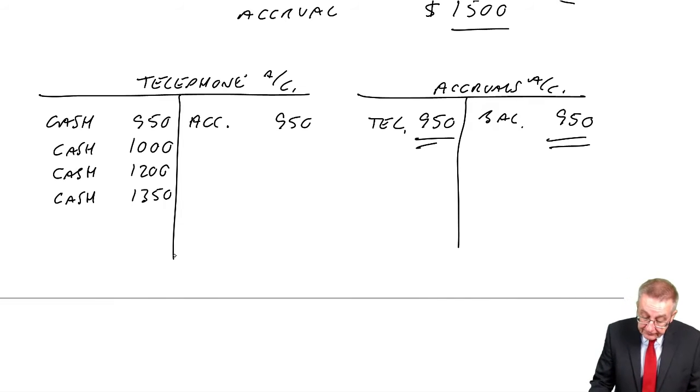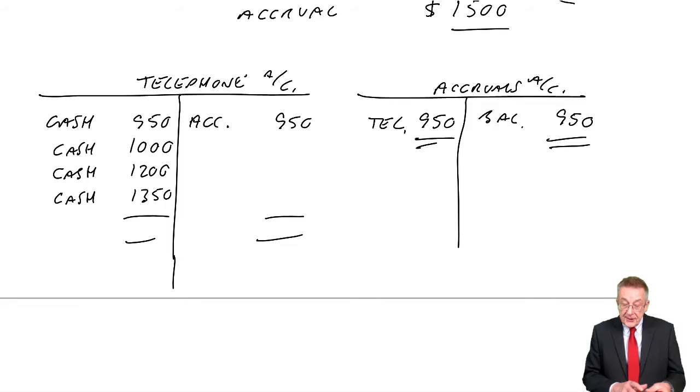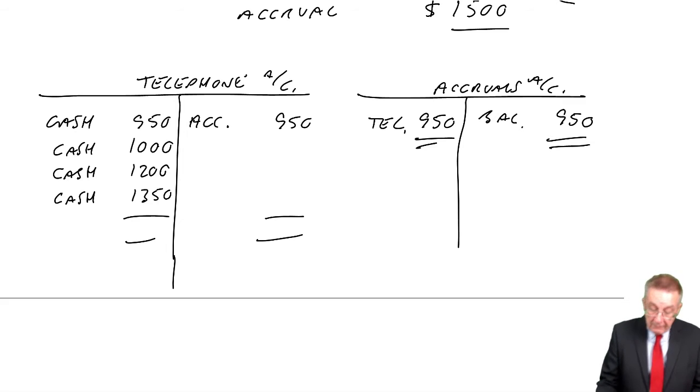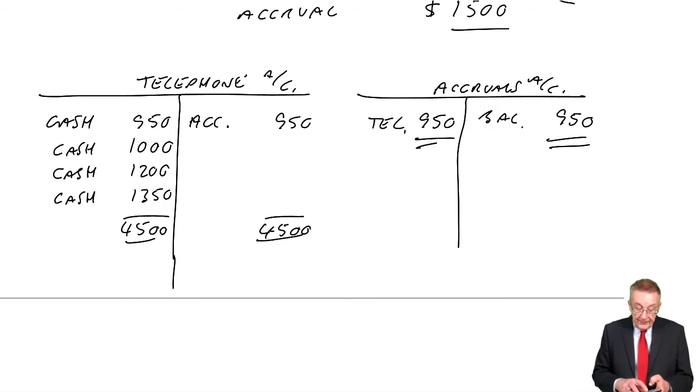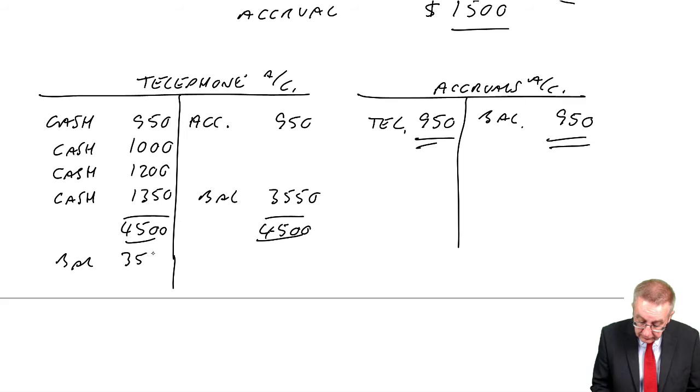And that's at the end of March, that's all the bookkeeper will have entered. The bookkeeper just enters every time we pay. Accountant arrives and takes the balance. Well, the balance, the debit side, adds up to 4,500. And so the balance, the missing figure, is 3,550.